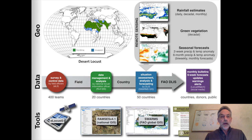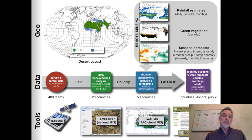We have a system to do that in Rome. It covers the invasion and the frontline areas stretching from West Africa to India — a huge area — so we rely on a variety of remote sensing products. We also rely on a data flow that comes from the field, from the survey and control teams, through the national locust centers and then up to Rome in DLIS. These countries use very innovative tools such as the e-locusts tablet for collecting data and transmitting it in real time, and custom geographic information systems to manage and analyze this data.